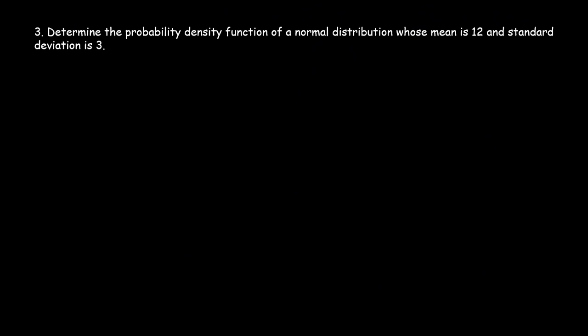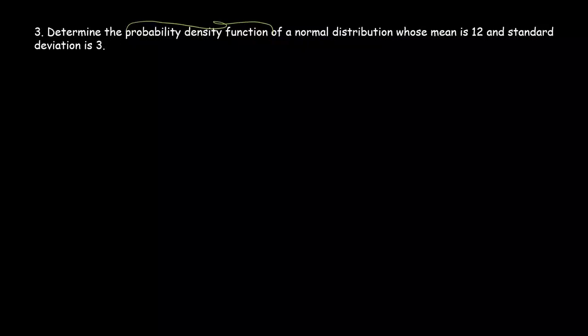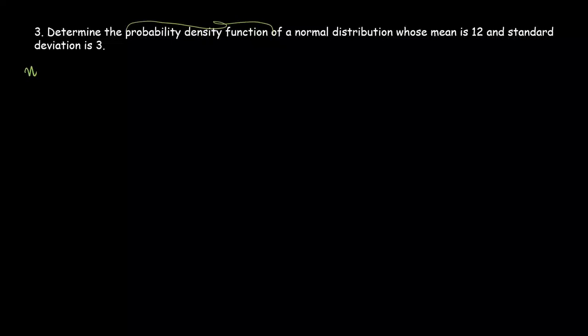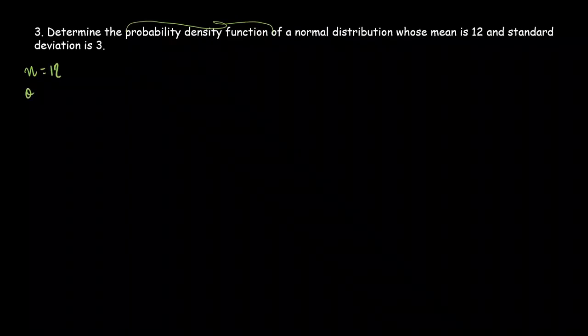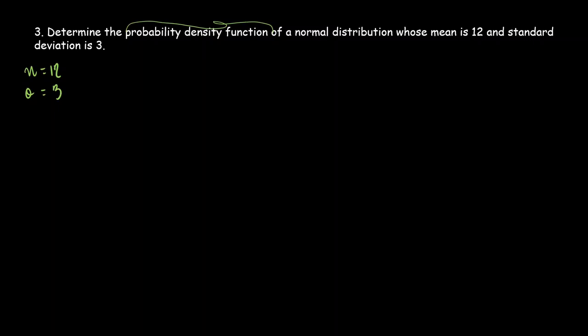Third example: Determine the probability density function of a normal distribution whose mean is 12 and standard deviation is 3. Since the question asks for the probability density function — from the word itself, 'function' — we are going to use the probability density formula. The givens are: mean equals 12 and standard deviation equals 3.